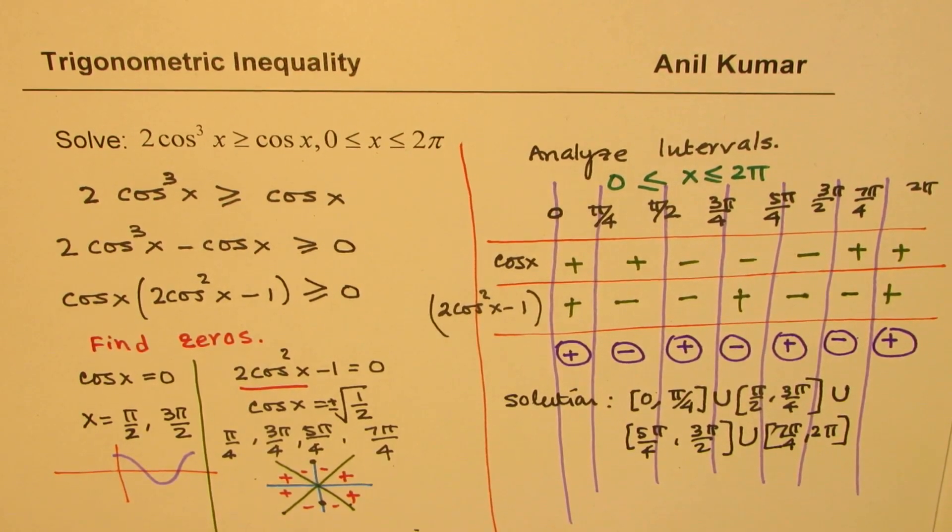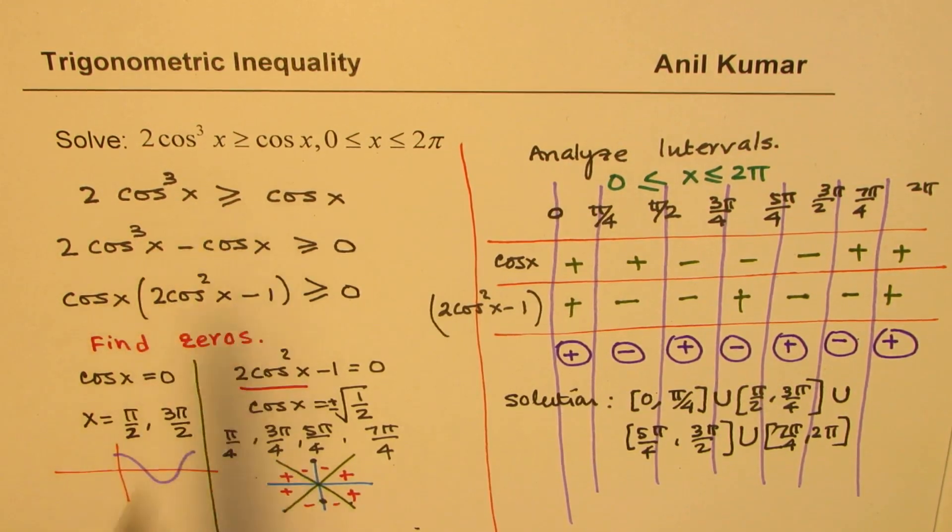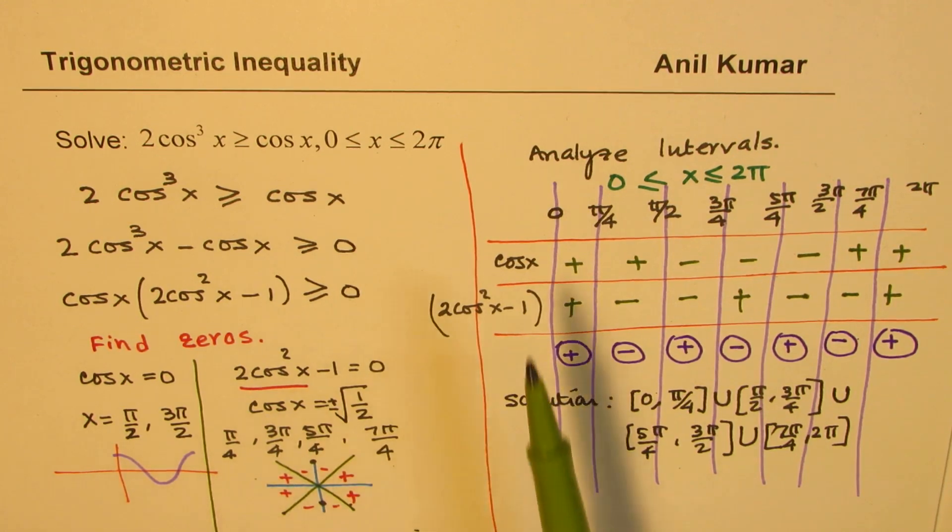Is that clear? So these are the intervals during which 2cos³x is greater than cos x. So we get 4 intervals when it is greater. Feel free to write your comments and share your views. I hope you understand and appreciate the strategy applied here. So what we have done basically is found the zeros and then analyze the interval between the zeros for both the factors. And that table really helps to solve inequalities just as you did for polynomial inequalities. So the strategy is kind of similar. Thanks for watching and all the best.